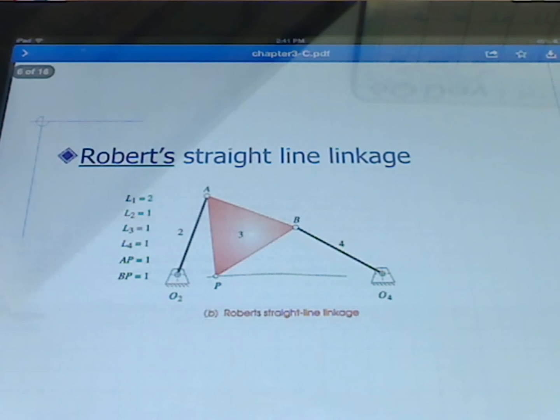Here we have the Roberts straight line linkage. It has more of a triangular shaped coupler. You can see here that the point P follows a straight line back and forth down here kind of near the ground link.